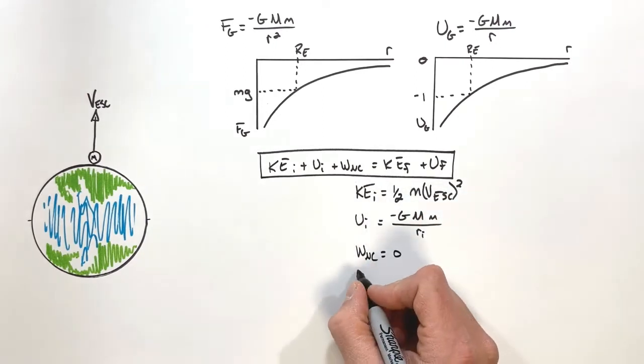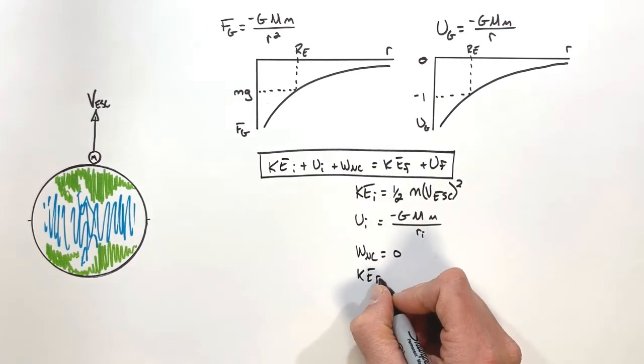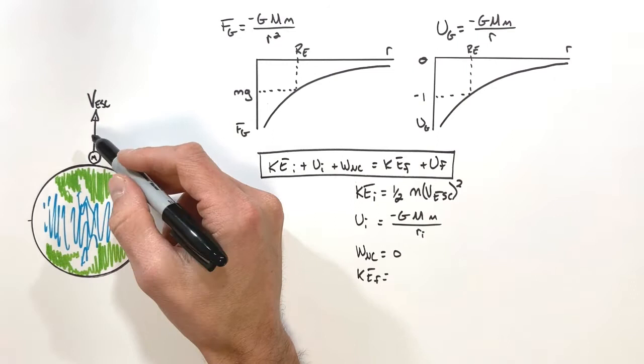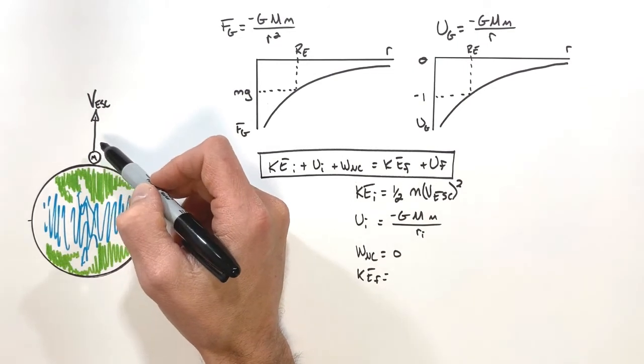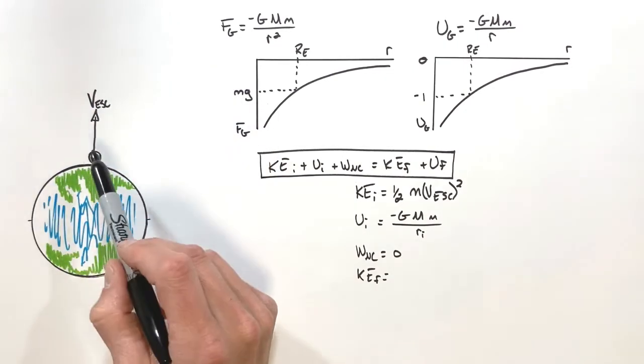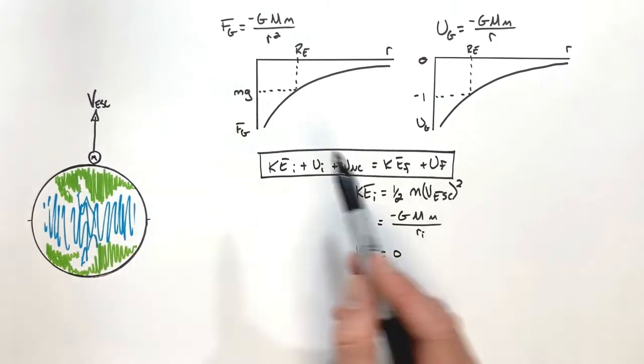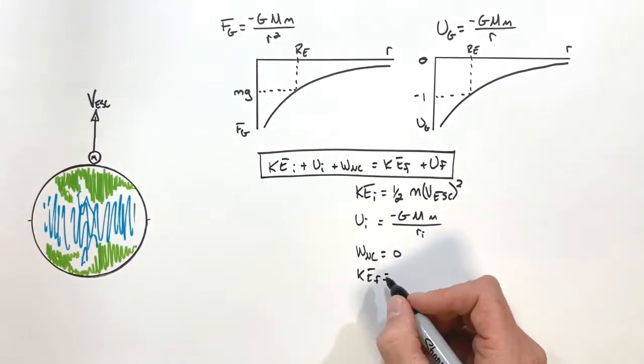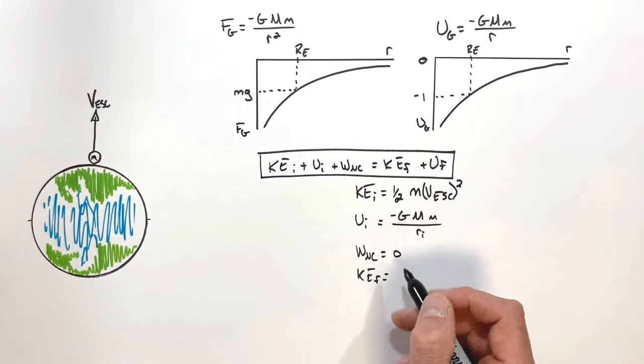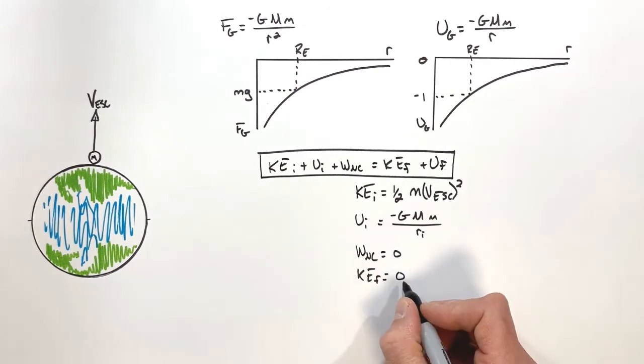Now the final kinetic energy, this one's a little bit weird. We are okay with this object stopping. Now I know you said, wait, hold on. We're trying to shoot this thing infinitely far out in space. And that is true. I'm fine with this object stopping once it gets infinitely far out in space. So the final kinetic energy is zero. And I understand, but wait, doesn't that mean it'll stop? Yes, once it reaches infinity. So in all practical terms, it's never going to stop.